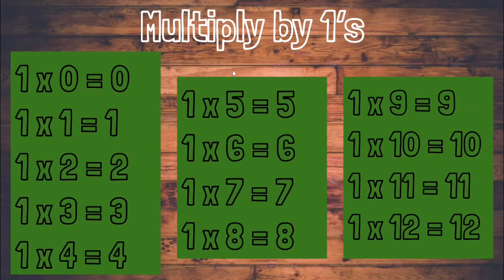The identity property of multiplication states that any factor or number multiplied by one equals that other factor. For example, one times two equals two. We know the product is two because one times any number equals that other number.